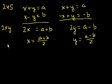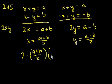And now we can figure out what 2xy equals. 2xy equals 2 times a plus b over 2 times a minus b over 2. This 2 will cancel out with one of these 2's. And what's a plus b times a minus b?